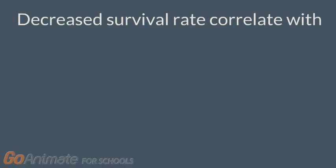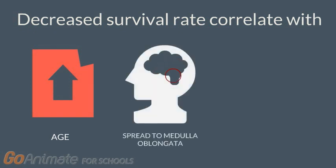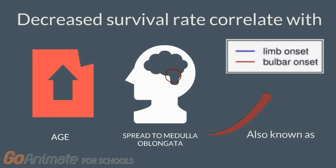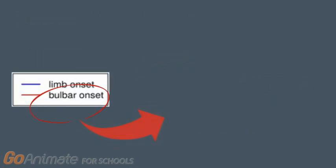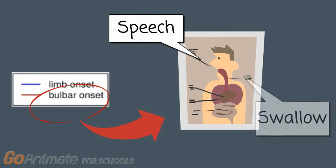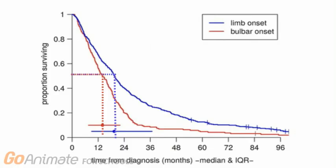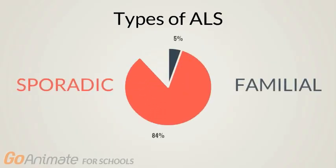This varying survival rate depends on multiple factors. Research shows that diagnosis at an advanced age, spread of ALS to the medulla oblongata — also called bulbar onset — and non-invasive ventilation and drug treatment correlate with reduced survival rates. Bulbar ALS accounts for the majority of symptoms as individuals begin to have speech and swallowing difficulties. A study of 575 ALS patients from England demonstrated that survival rate is affected by the area of ALS onset, with the bulbar onset group having a much lower survival rate compared to the limb onset group, as shown in this graph.